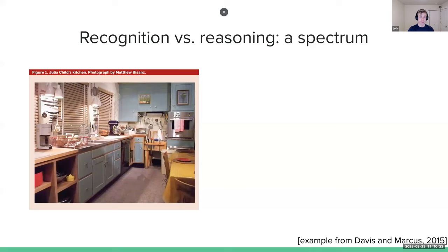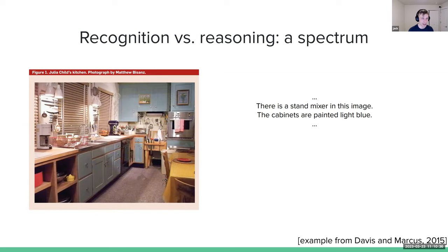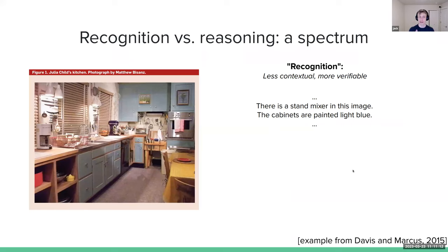Given this context, you could imagine writing down a bunch of facts about this image. You might start with very simple facts such as 'there is a stand mixer in this image' — you can see a blue appliance with a big bowl on the counter. You might also note 'the cabinets are painted light blue.' These are very literal inferences that seem mostly correct. You would be very surprised if either were incorrect. I categorize these as recognition-style inferences — they don't require a lot of context or world knowledge, and they're very hard to falsify.